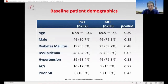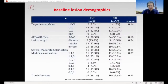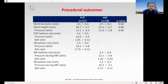For baseline patient demographics, there were no significant differences between the two groups. For baseline lesion demographics, left main disease was low in both groups — 1.7% in the KBT group and 3.5% in the POT group. Target vessel was mainly the left anterior descending artery at 70% in each group. True bifurcation was 30% in both groups.